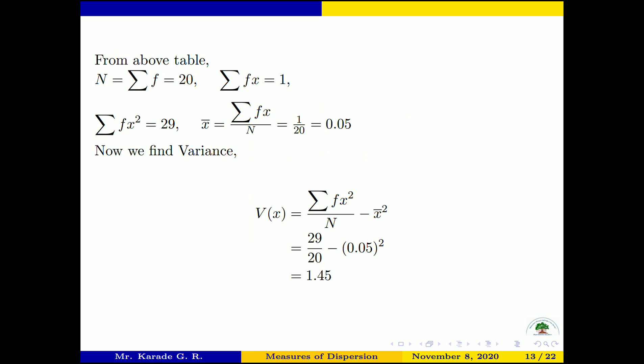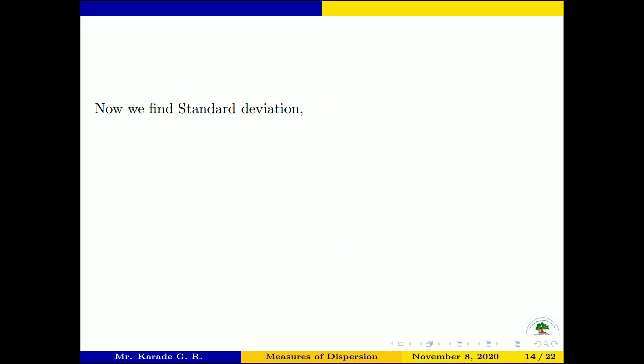Now we find the standard deviation. Standard deviation σₓ = square root of variance = square root of 1.45 = 1.204. This is the standard deviation of the given observations.